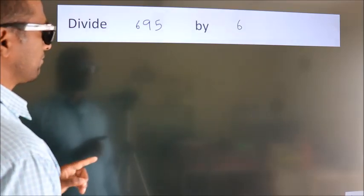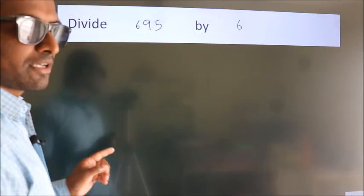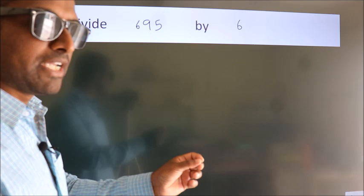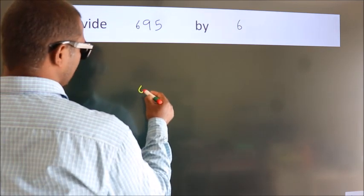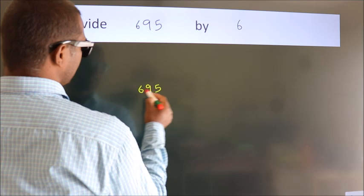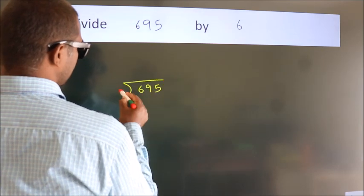Divide 695 by 6. To do this division, we should frame it in this way. 695 here, 6 here.